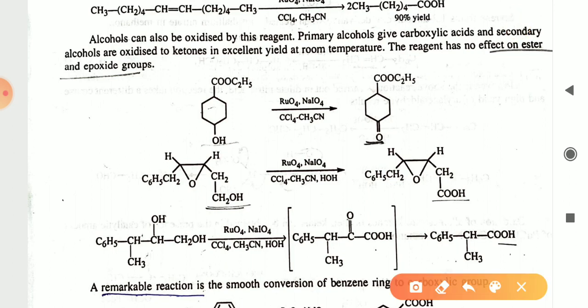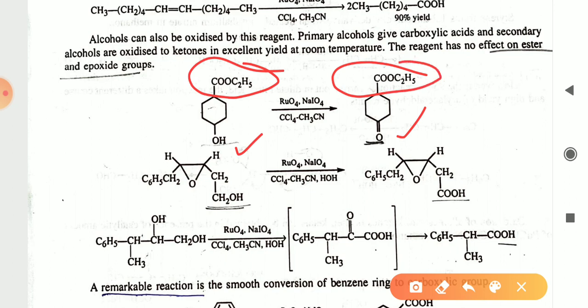In the mechanism, you can see the alcohol group converts into the carboxylic acid group. Where an epoxide group is present, there is no oxidation — it only affects the alcohol group. In another example, CH2OH converts into the COOH group.